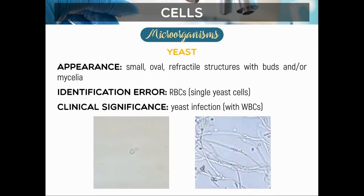Next we have yeast cells, which appear as small, oval, refractile structures with buds or mycelia. A single branch is called a hypha; multiple branches form mycelia. Their identification error is RBCs, since single yeast cells may resemble RBCs. Clinical significance is infection, and increased WBCs should be present in the urine. We also have Trichomonas vaginalis, whose clinical significance is trichomoniasis — a sexually transmitted infection. Trichomonas is known as a 'ping pong disease' because males are often asymptomatic and unknowingly pass the infection back and forth. Trichomonas only forms a trophozoite, no cyst form. Identification error is WBCs or RTE cells when it is non-motile.